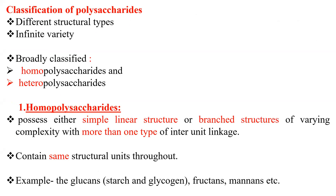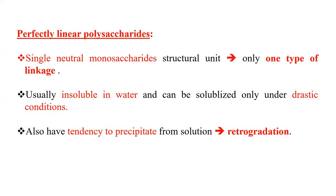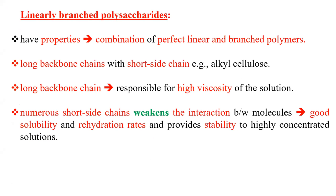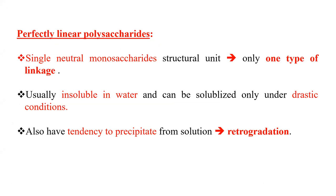Polysaccharides are available in infinite variety in nature across various plant materials, each with different structural types. They are broadly classified as homopolysaccharides and heteropolysaccharides. Homopolysaccharides include perfectly linear polysaccharides, branched polysaccharides, linearly branched polysaccharides and modified polysaccharides.